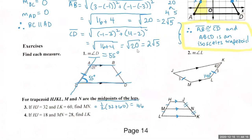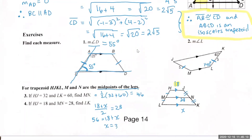In question four, HJ is 18 and MN — the mid-segment — is 28. This time they give you the average, and you don't know LK. Set up the equation: (18 plus x) divided by 2 equals 28. Cross-multiply and solve. The correct answer is x equals 38. The mid-segment is the average of the two bases.